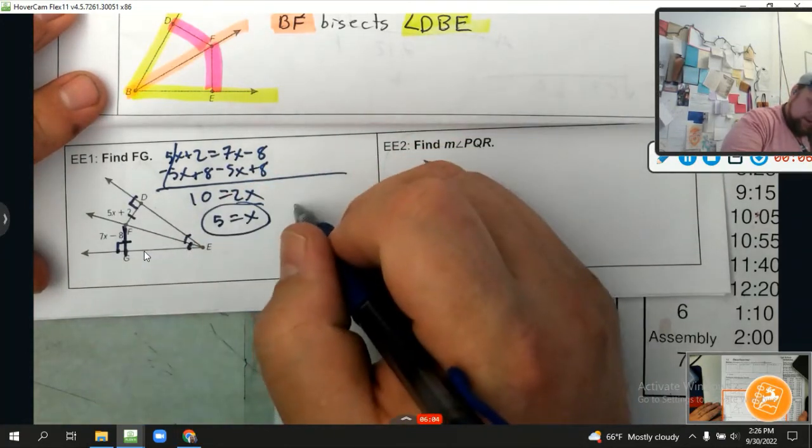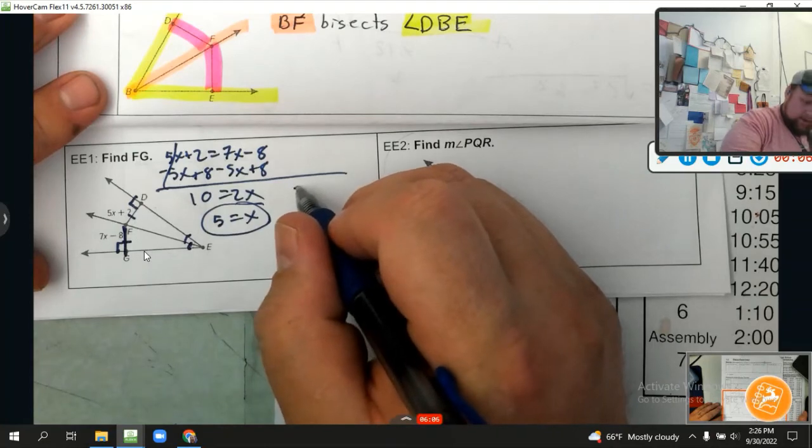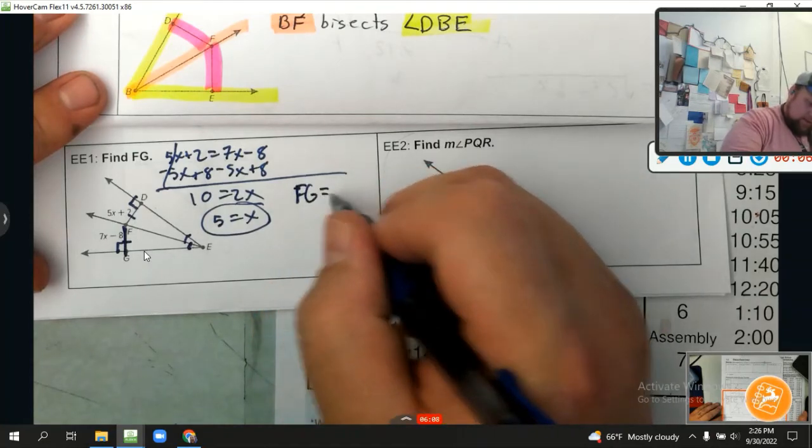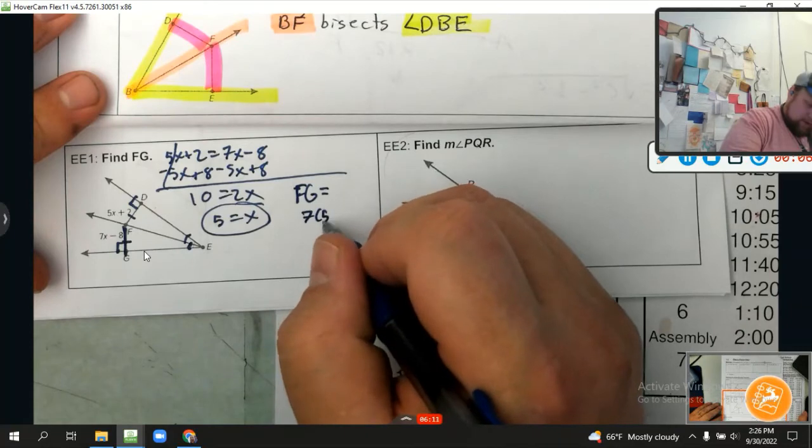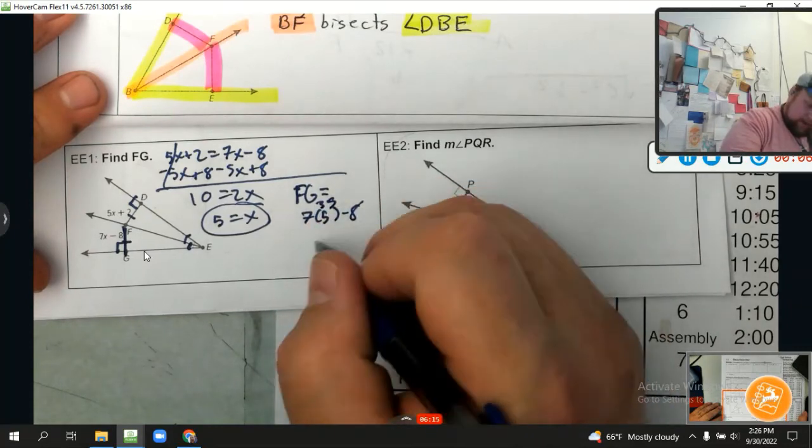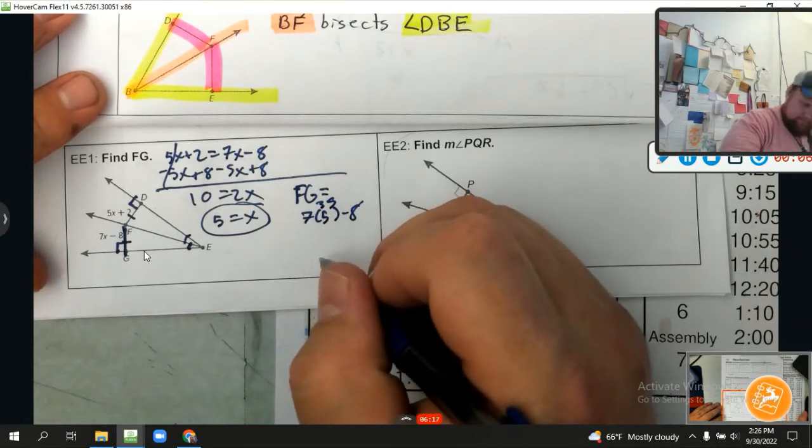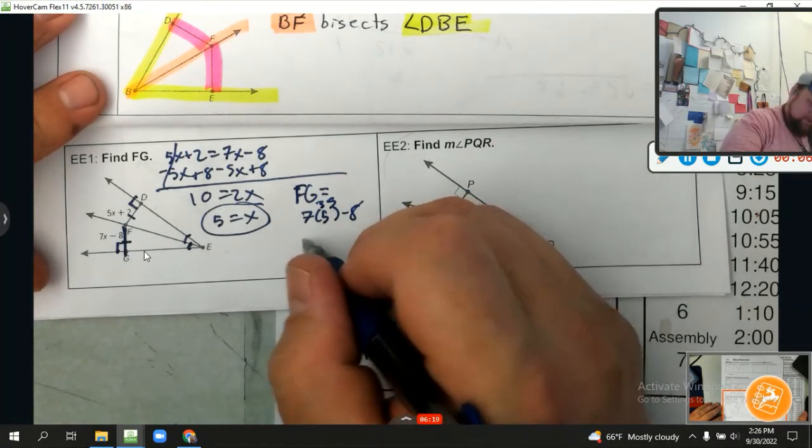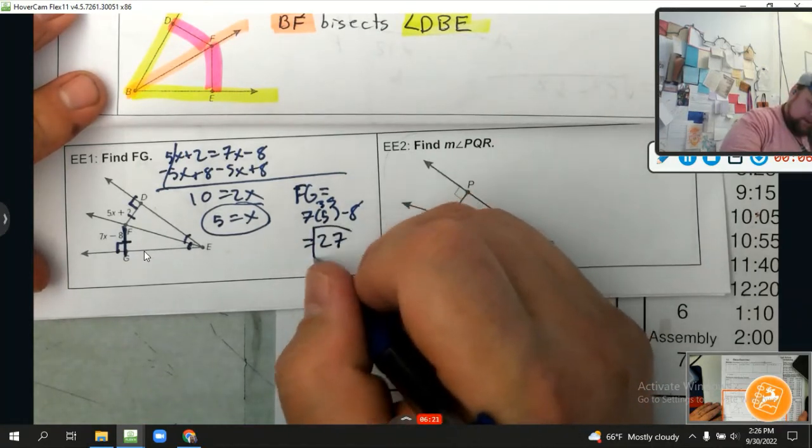So to find that, let's plug it in. FG equals 7 times 5 minus 8, which is 35 minus 8, is 27. Yeah, that's our answer.